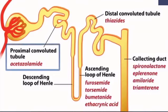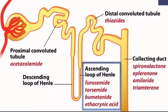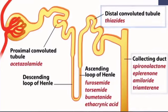The different functional zones of the nephron and the drugs that act on them: in the proximal convoluted tubule, acetazolamide acts here. In the descending loop of Henle, there are no diuretics that work there. In the ascending loop of Henle, we have loop diuretics like furosemide, torsemide, bumetanide, and ethacrynic acid. In the distal convoluted tubule, we have thiazide diuretics. And in the collecting duct, we have potassium-sparing diuretics: spironolactone, eplerenone, amiloride, and triamterene.